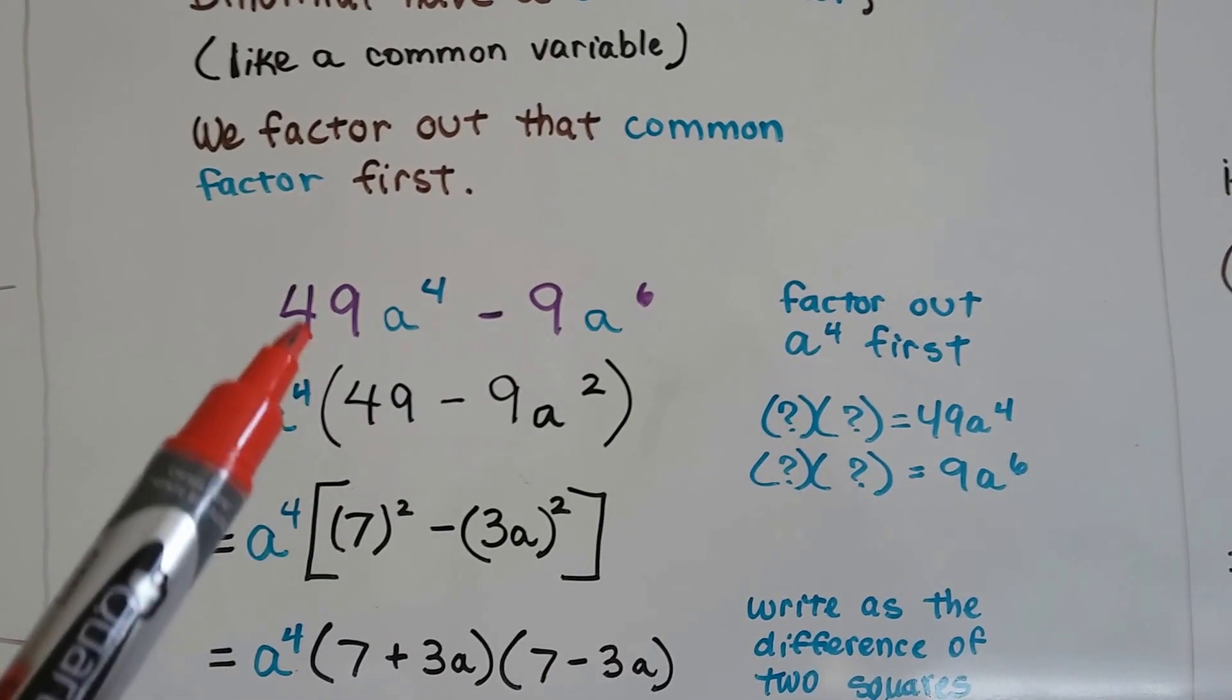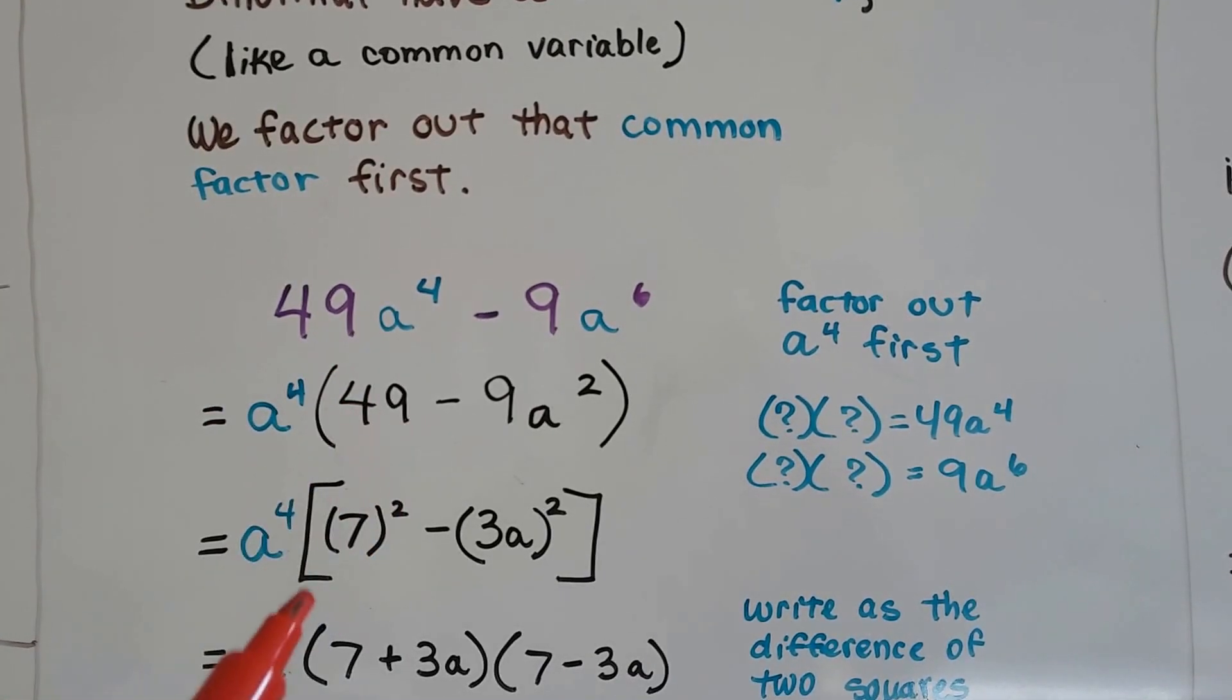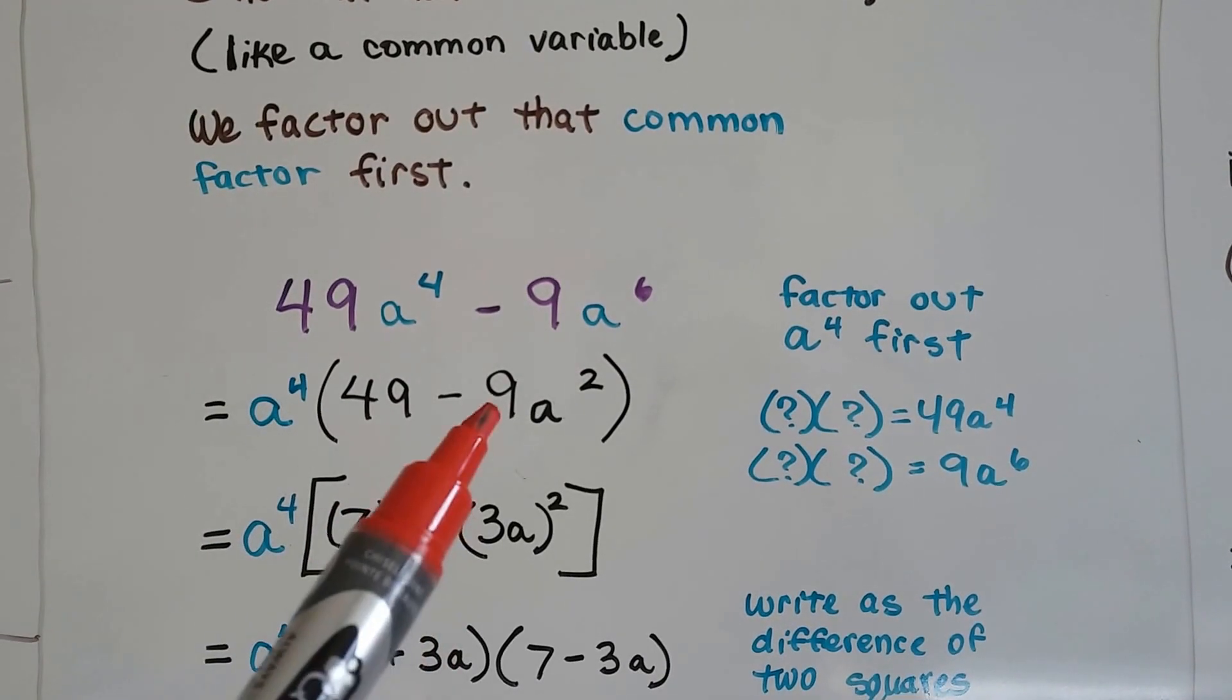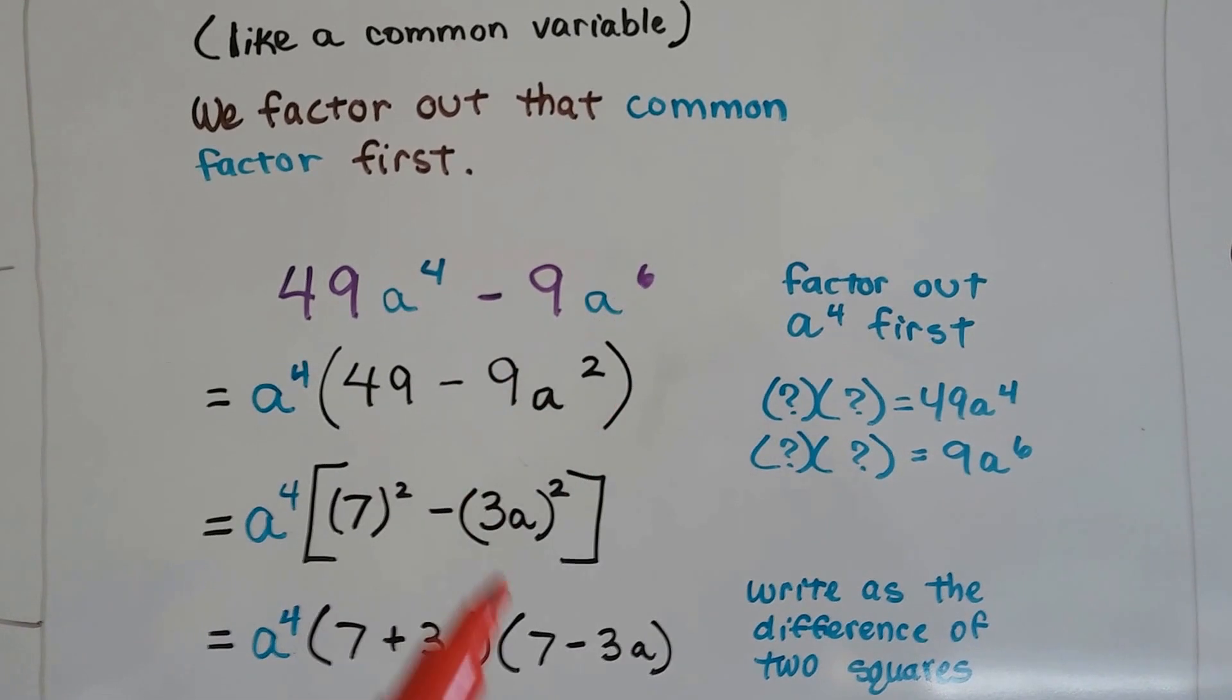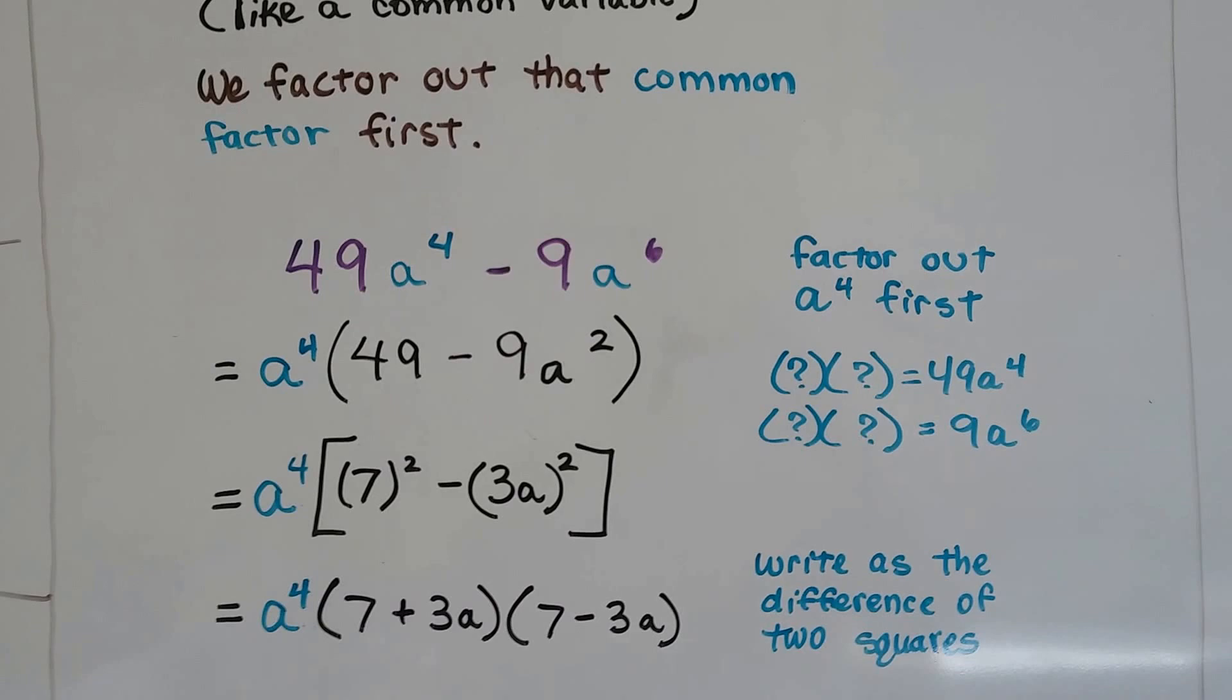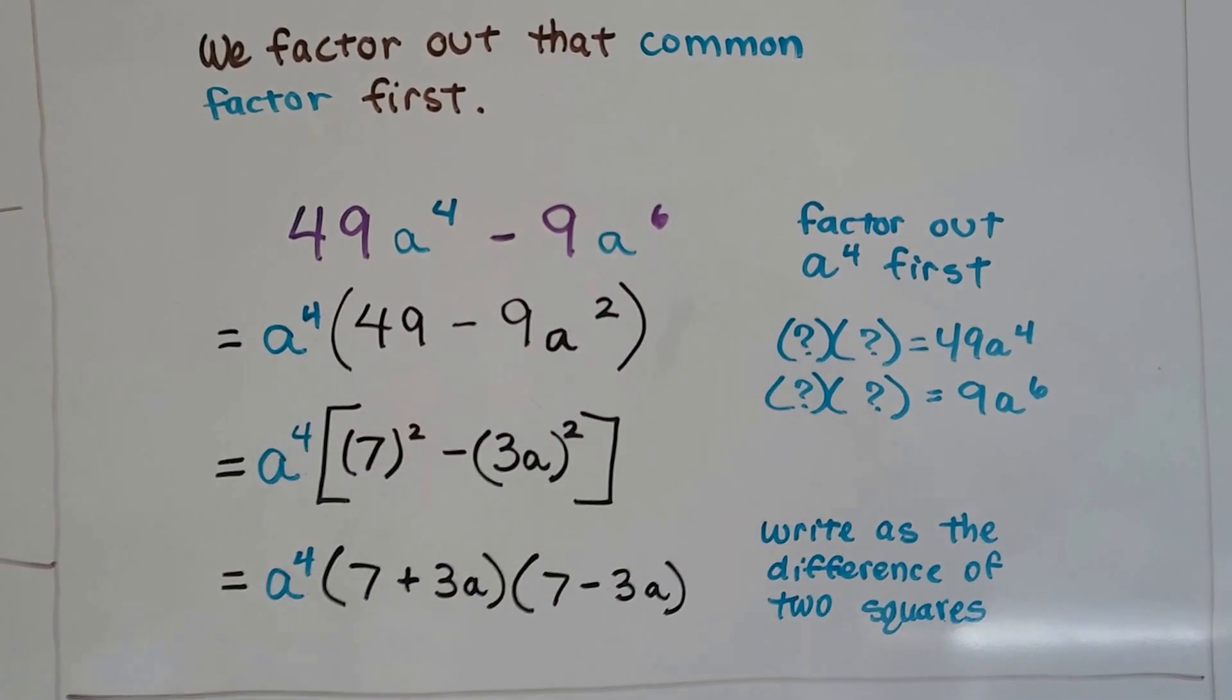The a^4 is going to come up front of the parentheses. We ask ourselves, a^4 times what would be 49a^4? It would be 7 times 7. And a^4 times what would be 9a^6? It would be 3a². That would give us this 9a^6 when we add the 4 and the 2.